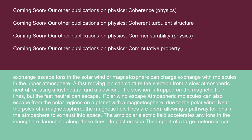Atmospheric molecules can also escape from the polar regions on a planet with a magnetosphere due to the polar wind. Near the poles of a magnetosphere, the magnetic field lines are open, allowing a pathway for ions in the atmosphere to exhaust into space. The ambipolar electric field accelerates any ions in the ionosphere, launching them along these lines.